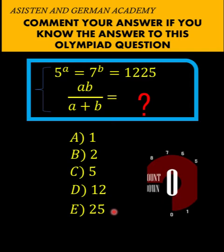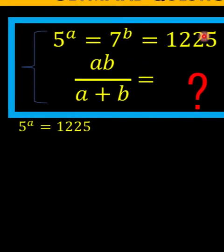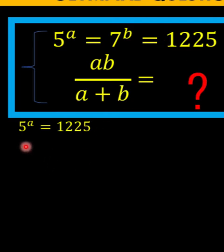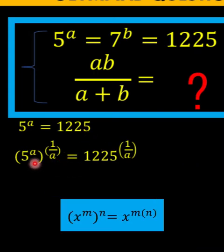Now let's solve this problem together. Let's begin with 5 raised to a equals 1225, and later we will also equate 7 raised to b equals 1225. Using properties of equality, we can raise both sides of this equation to the same exponent 1 over a — so the left side is raised to 1 over a and the right side is raised to 1 over a. By the power of power rule, the left side can be simplified.